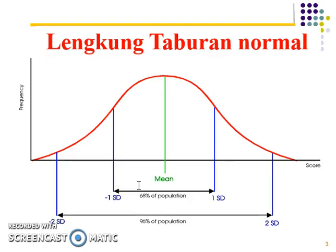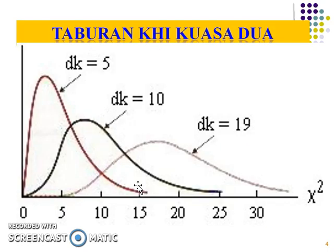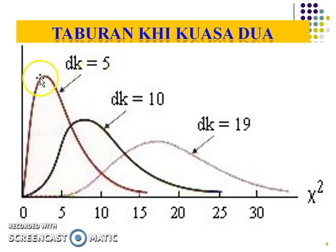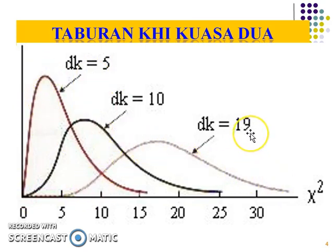This is about the normal curve and this is about the chi-curve. The chi-curve is determined by how many degrees of freedom you have. With a lesser degree of freedom, your chi-curve will be taller than those having a higher degree of freedom. This is the chi-curve.